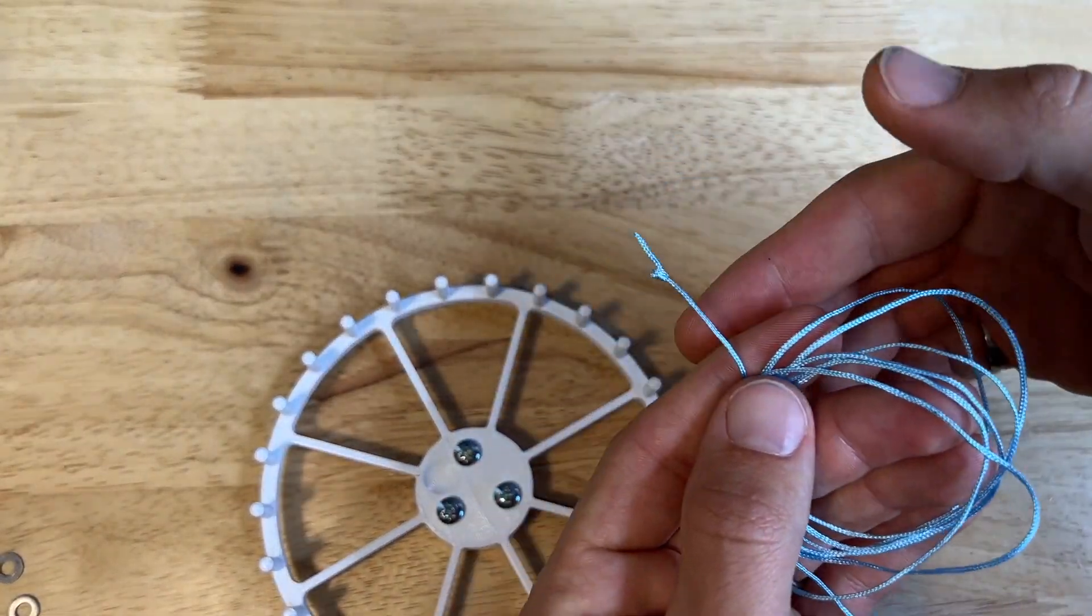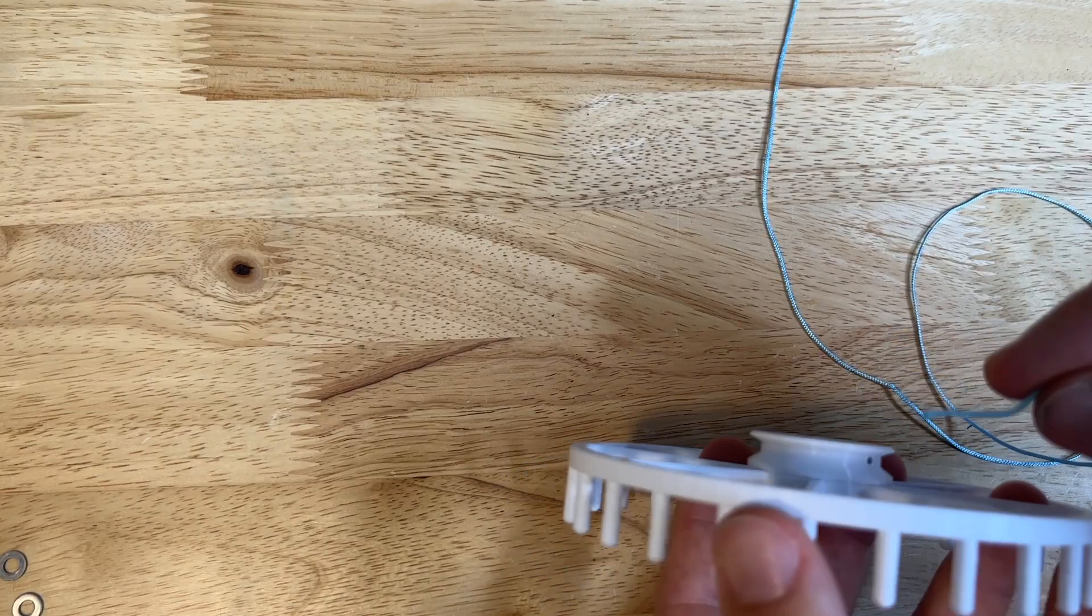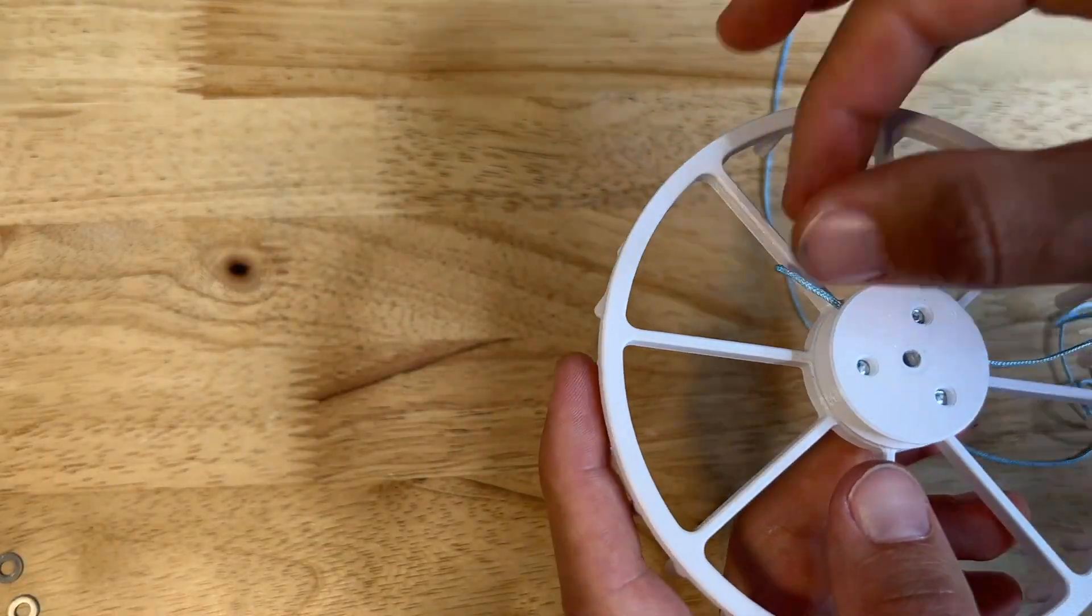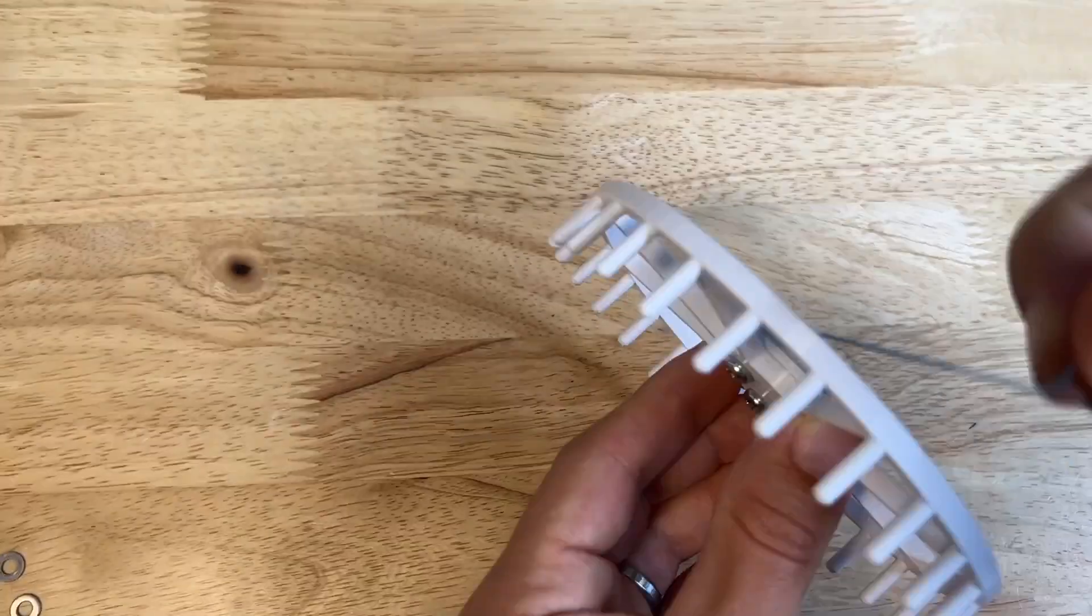Next, grab your string, tie a knot on the end of the string, take the unknotted side and slide it through the hole in the spool. Push it all the way through and then pull it, make sure that the knot doesn't come out. You can wrap the string around the spool just so it's out of the way.